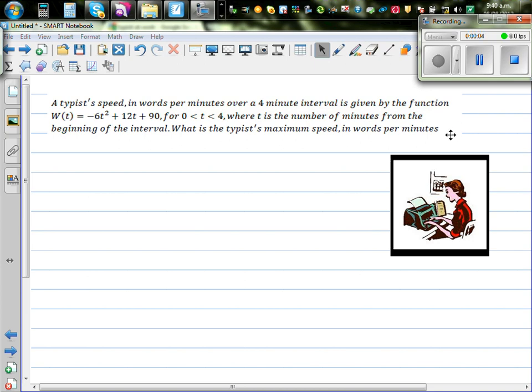A typist's speed in words per minute over a 4 minute interval is given by the function W(t) = -6t² + 12t + 90 for t between 0 to 4, where t is the number of minutes from the beginning of the interval. So this is a 4 minute interval.